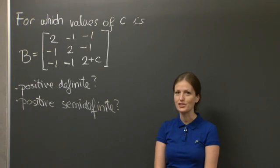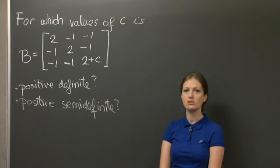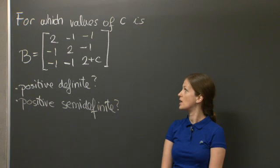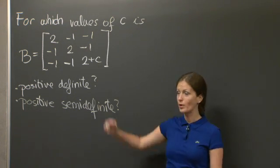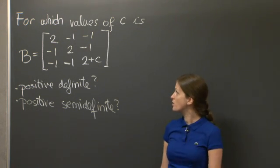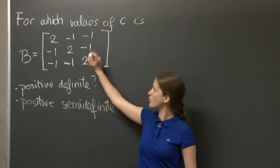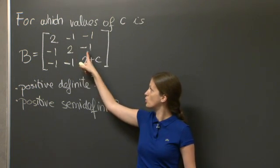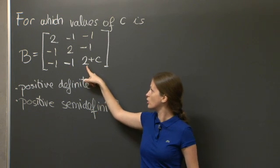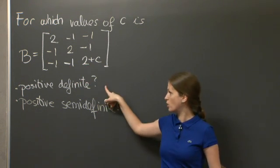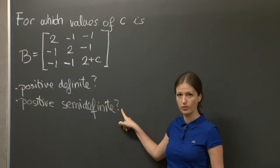Welcome to recitation. Today's problem is about positive definite matrices, and it's asking us for which values of the parameter c, sitting here in a matrix B — with entries 2, -1, -1, -1, 2, -1, -1, -1, 2+c — is the matrix positive definite, and for which values of c is it positive semi-definite?